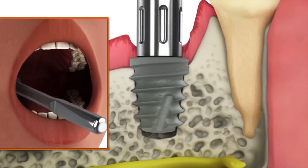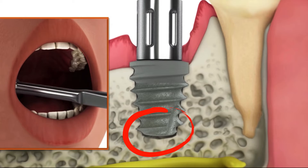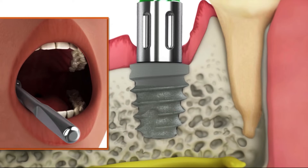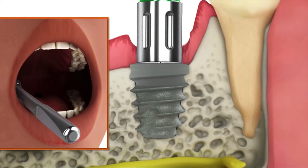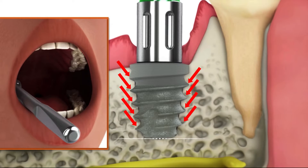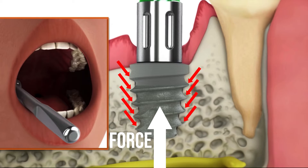As the implant reaches the bottom of the osteotomy, the flat bottom of the implant will make contact with the bone. If you've planned your case properly and drilled to the prescribed depth, your implant will reach its proper depth at this point — you'll stop driving and you'll be good to go. However, if something went wrong with your osteotomy depths or case plan, once the bottom of the implant touches the bone, the bone will push back against the implant just like the wall in our physics example. You might think this isn't an issue — can't you just push down harder on the driver and force the implant to the proper depth? Unfortunately, no.